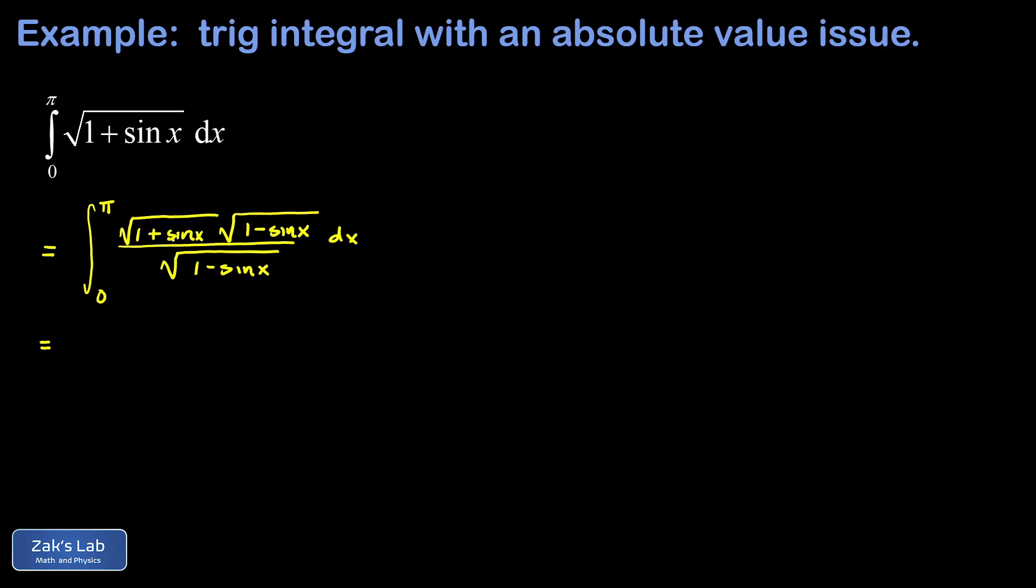When we multiply the interiors of these two square roots we get 1 for the first term. The cross terms cancel and then we get negative sine squared x for the second term.